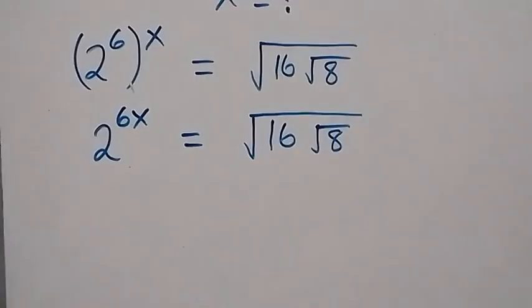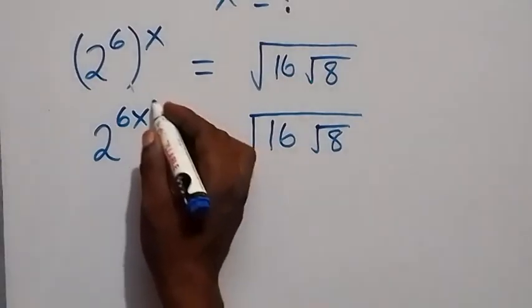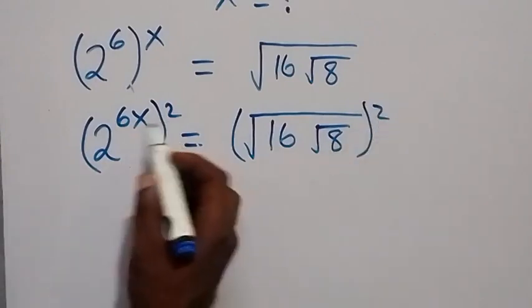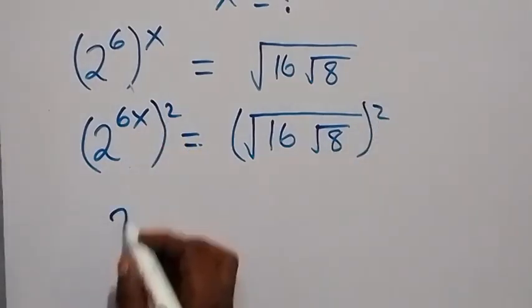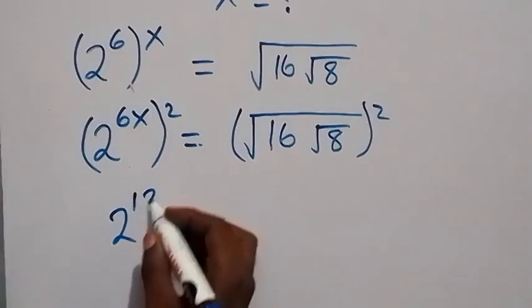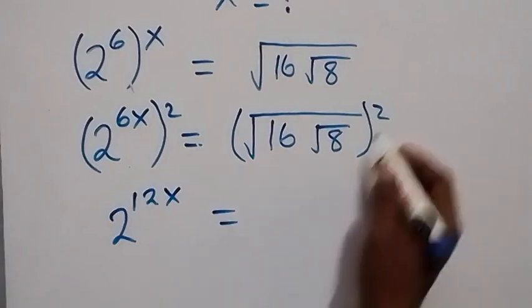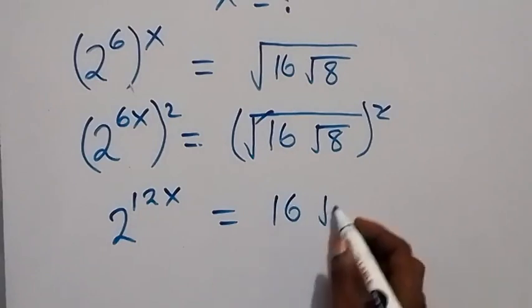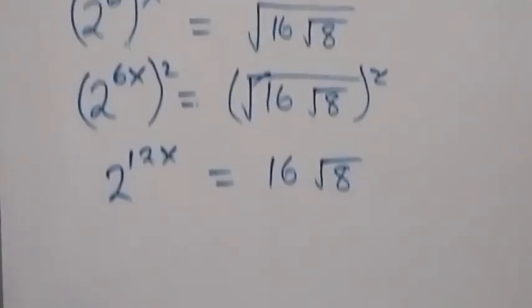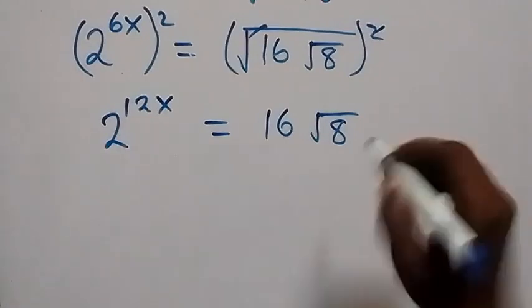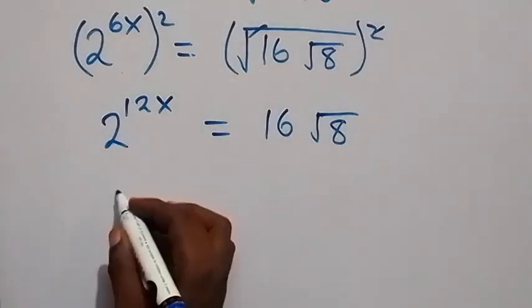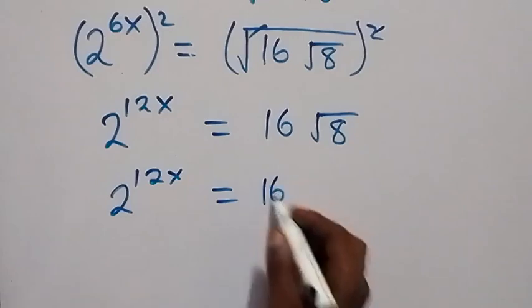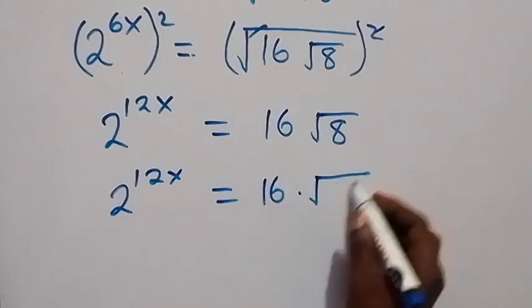Now let's square both sides. The square will multiply the powers, so we have 2 raised to power 12x. On the right side, squaring cancels the square root, giving us 16 times root 8. So we have 2 raised to power 12x equals 16 times root 8.